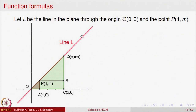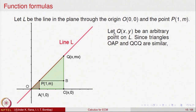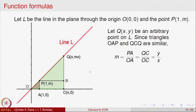If Q is a point on this line with coordinates x comma y, we want to compute y in terms of x. Let us look at two triangles: triangle QCA and triangle PAO. I have drawn a line parallel to the x-axis and a line parallel to the y-axis; they meet at point B. The claim is that these two triangles are similar because this angle is common to both and each has a 90-degree angle.